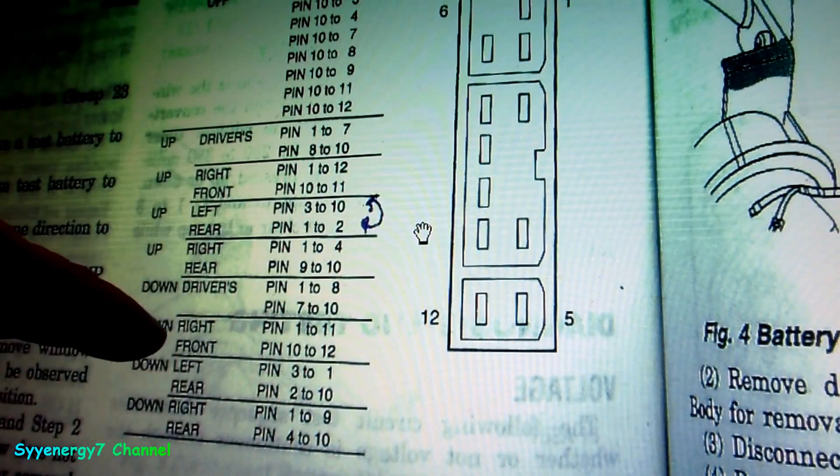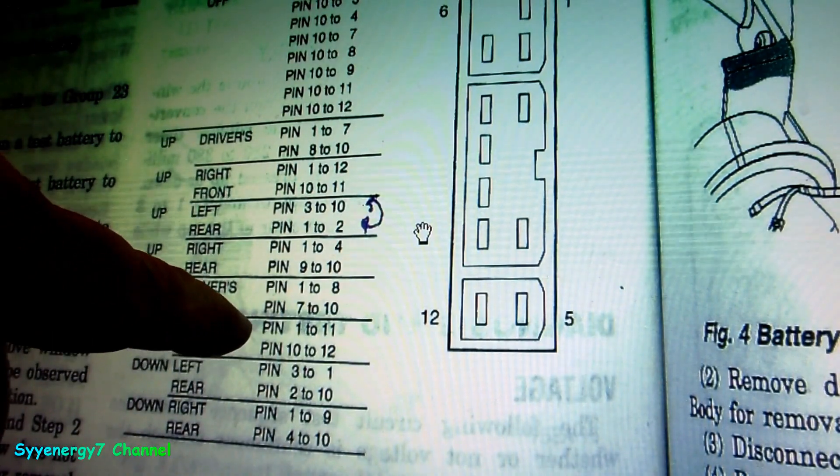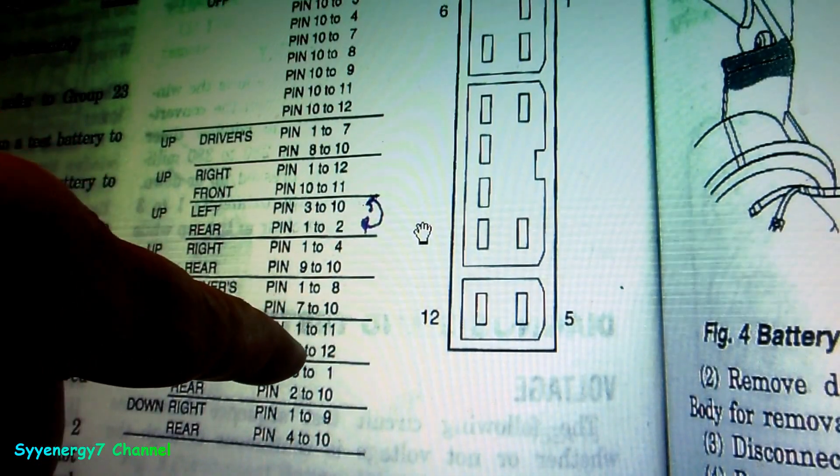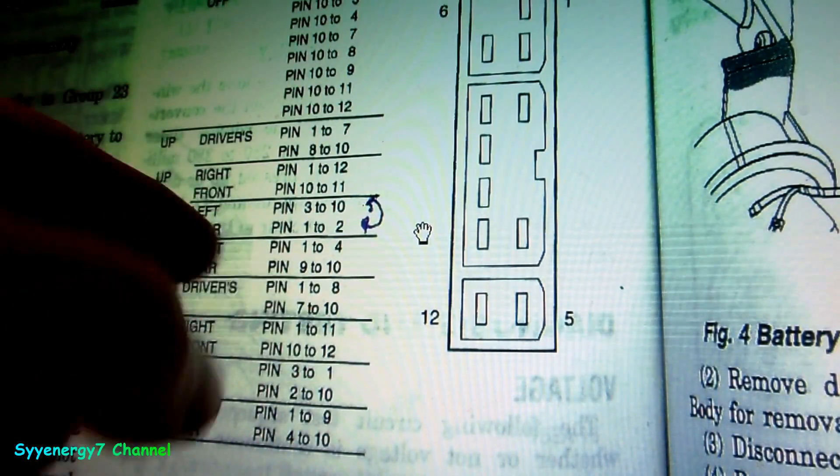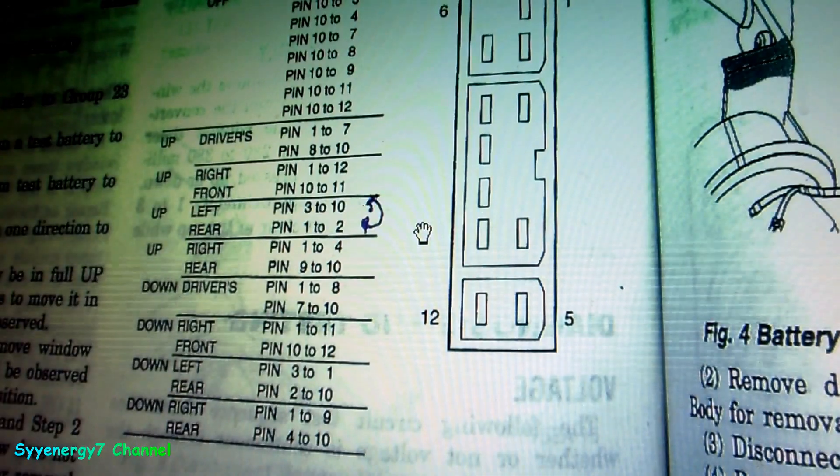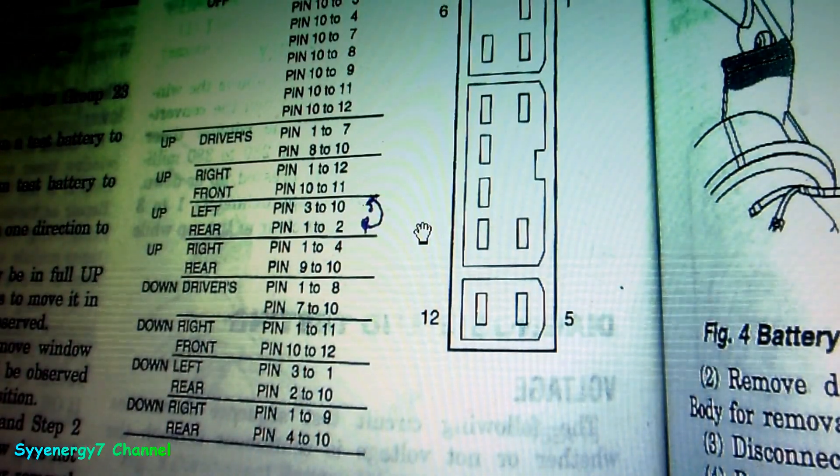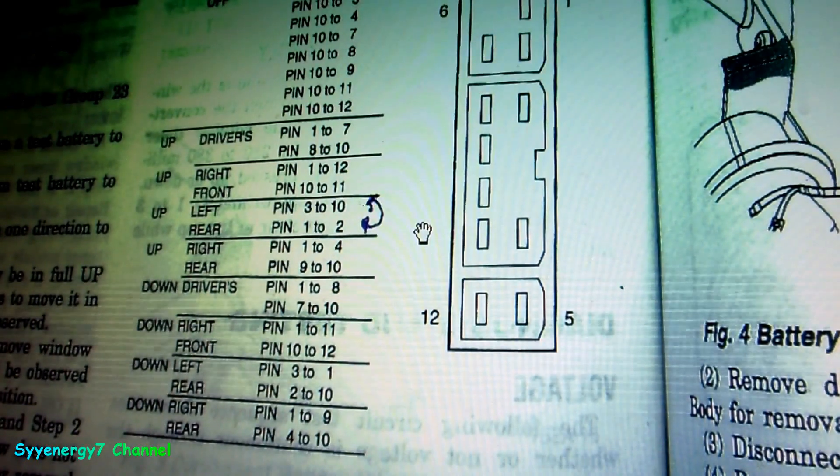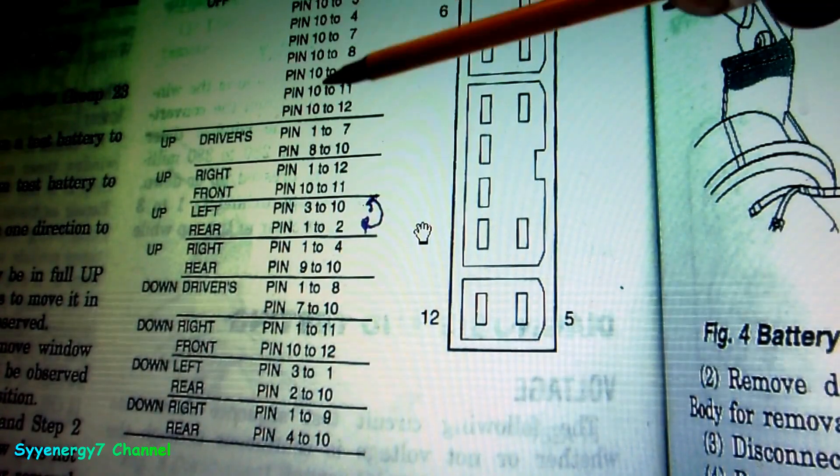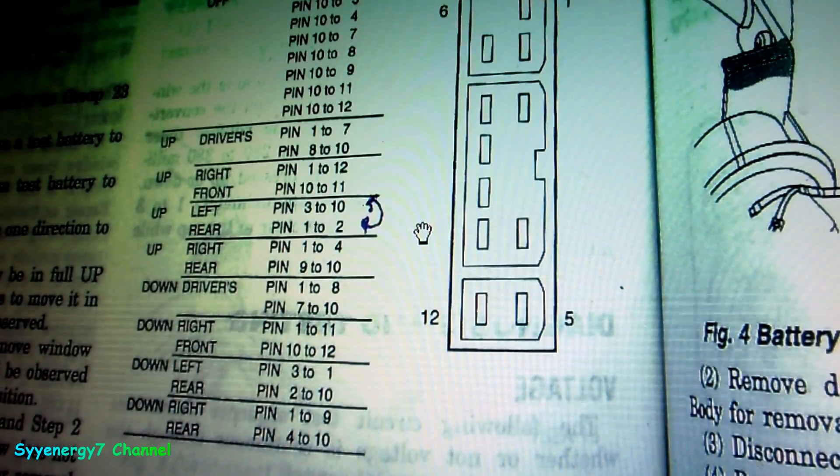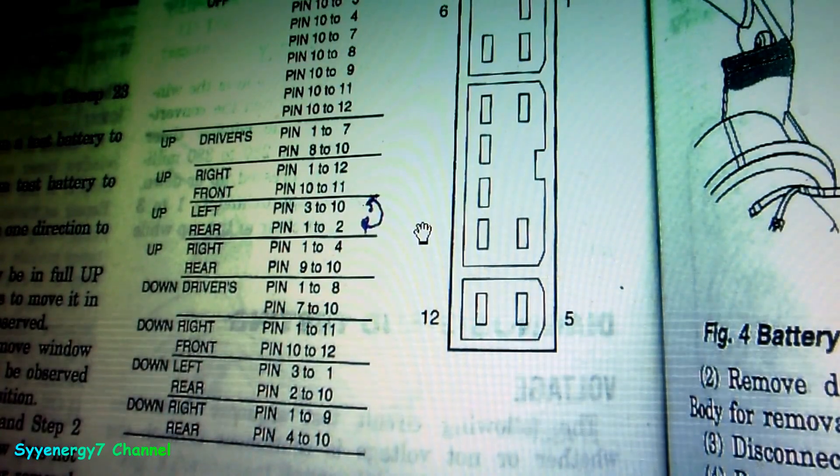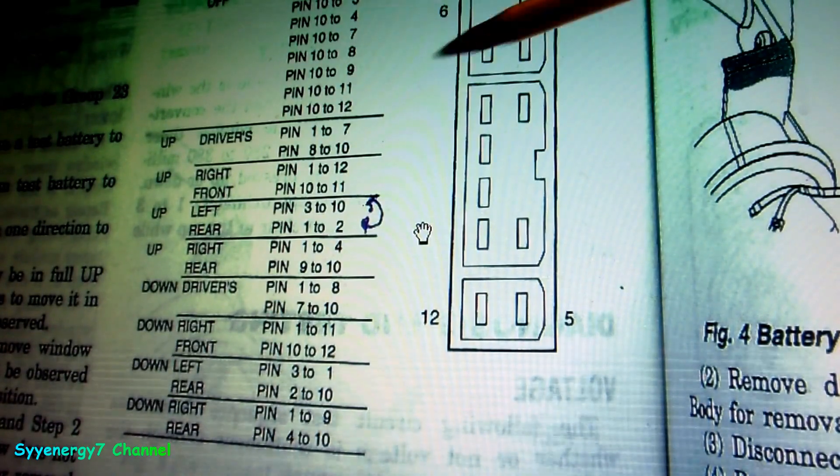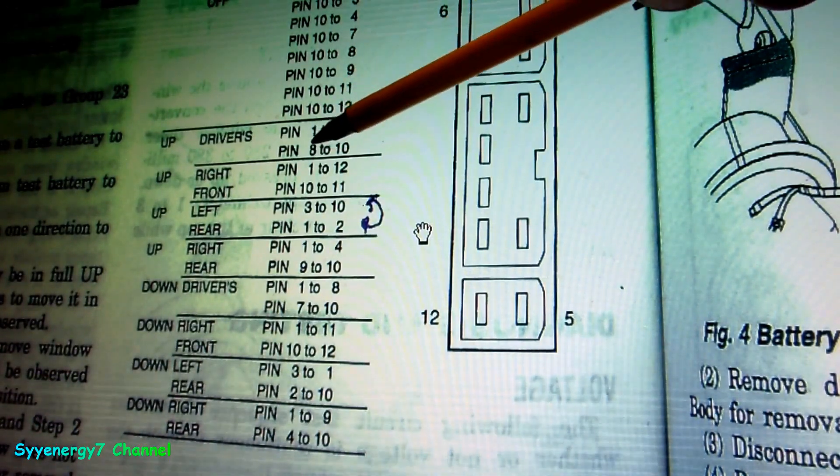If you look at this, these are the pins. To go down right on the right side, which is the passenger side, you go 1 to 11, and that's the actual switch. Then 10 to 12 is the power. You got to go from 10 - 10 is always continuous to 2, 3, 4, 7, 8, 9, 10, and 12 all the time.